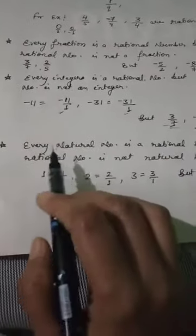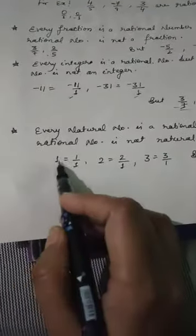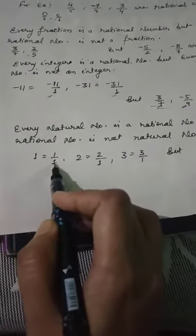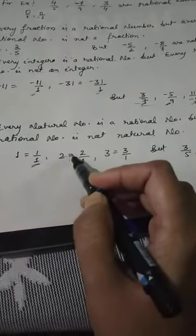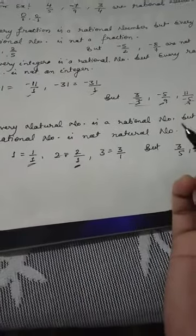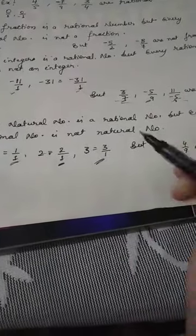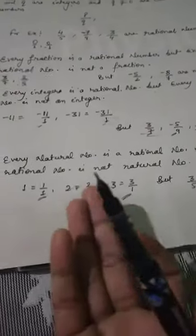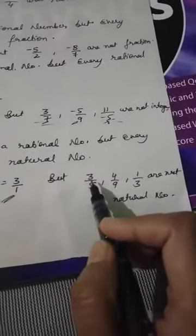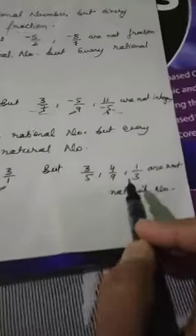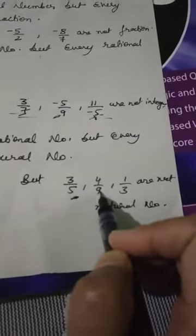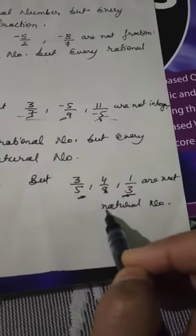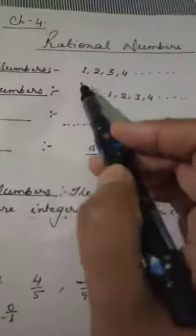Similarly for natural numbers: every natural number is a rational number, but every rational number is not a natural number. For example, 1 can be written as 1/1, 2 as 2/1, and 3 as 3/1 — all rational numbers. But 3/5, 4/9, and 1/3 are rational numbers that cannot be natural numbers because natural numbers are counting numbers, and these are not counting numbers.